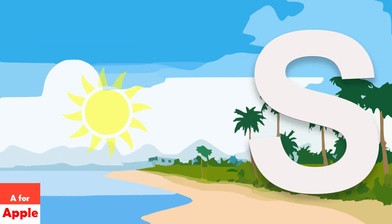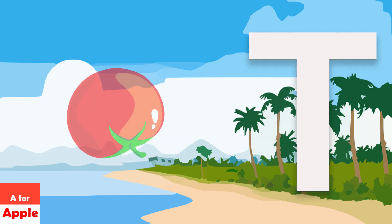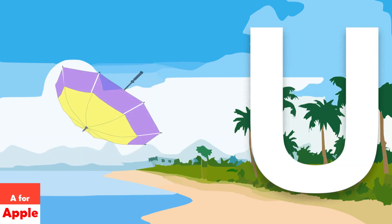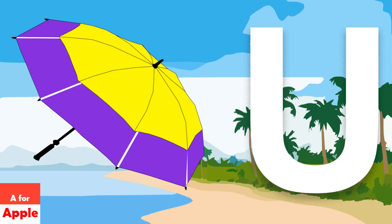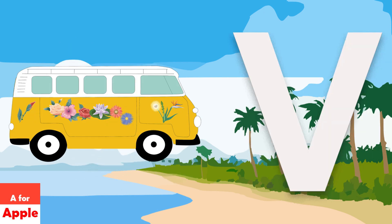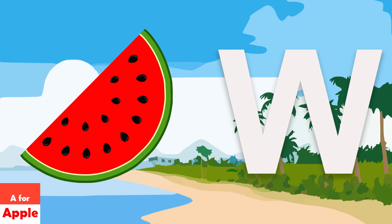Q for Queen, R for Rabbit, S for Sun, T for Tomato, U for Umbrella, V for Van, W for Watermelon.